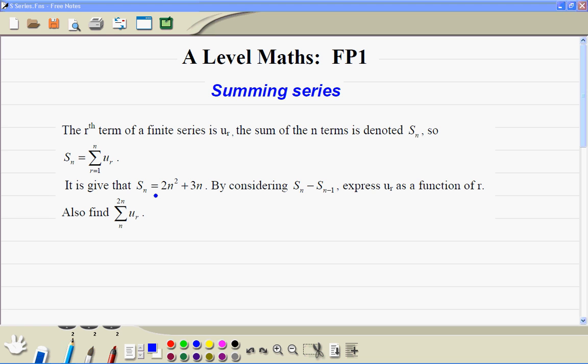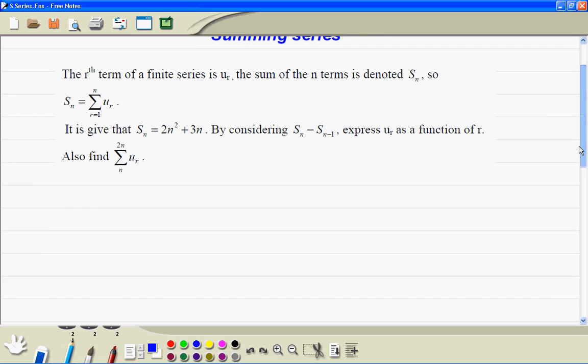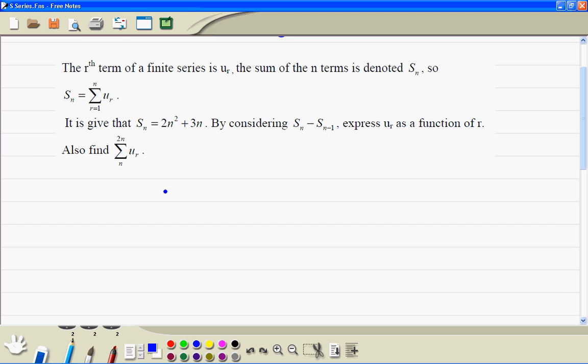First of all, we are going to use this formula to work out the sum of one term. So the one term is S1. Substitute n equal to 1 into this formula. S is 1 squared times 2 plus 3 times 1 is 5. So if the sum of the first term is 5, we can just write the first term is equal to 5.